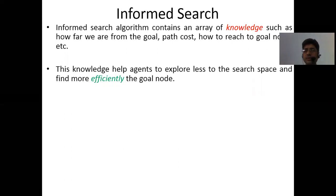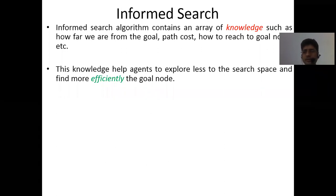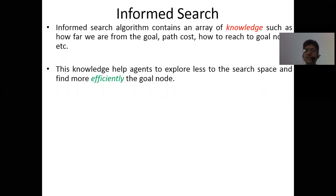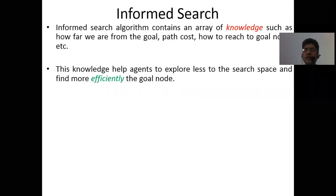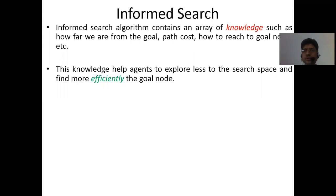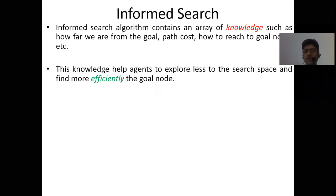This knowledge helps agents — recall our discussion of agents from unit one — to explore less of the search space and find the goal node more efficiently. For example, if you want to go to Sahara Ganj mall in Lucknow but don't know where it is, you would have to search every area like Aliganj, Dindranagar, Mahanagar — looking for it without direction.